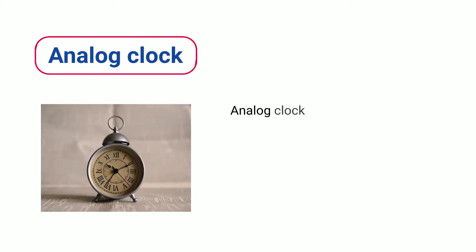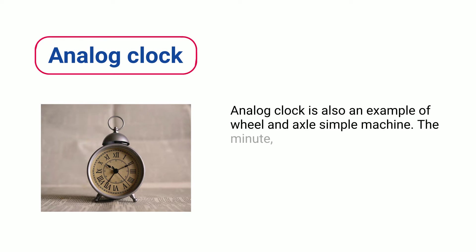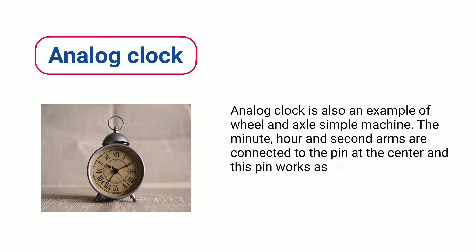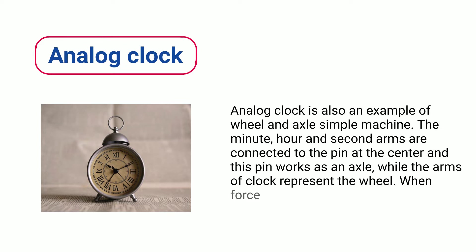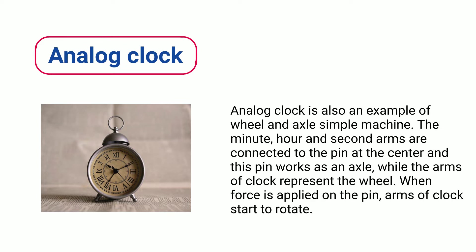Analog Clock. An Analog Clock is also an example of a wheel and axle simple machine. The minute, hour, and second arms are connected to the pin at the center, and this pin works as an axle, while the arms of the clock represent the wheel. When force is applied on the pin, the arms of the clock start to rotate.